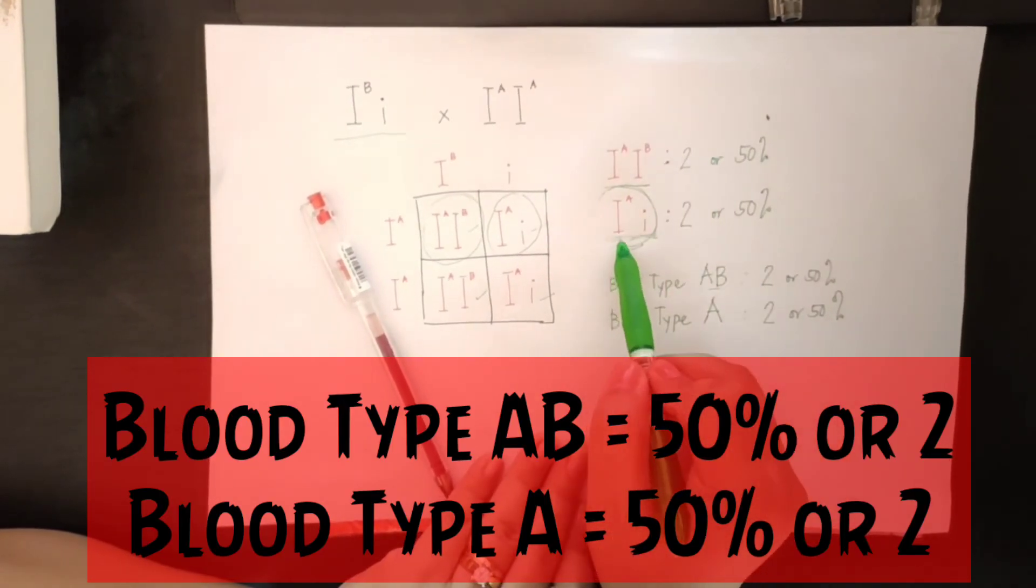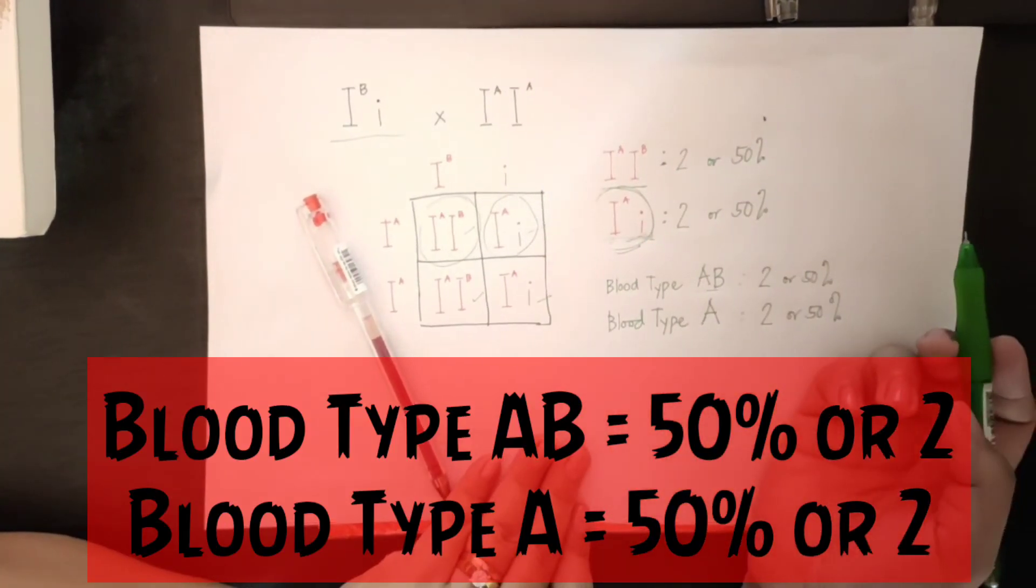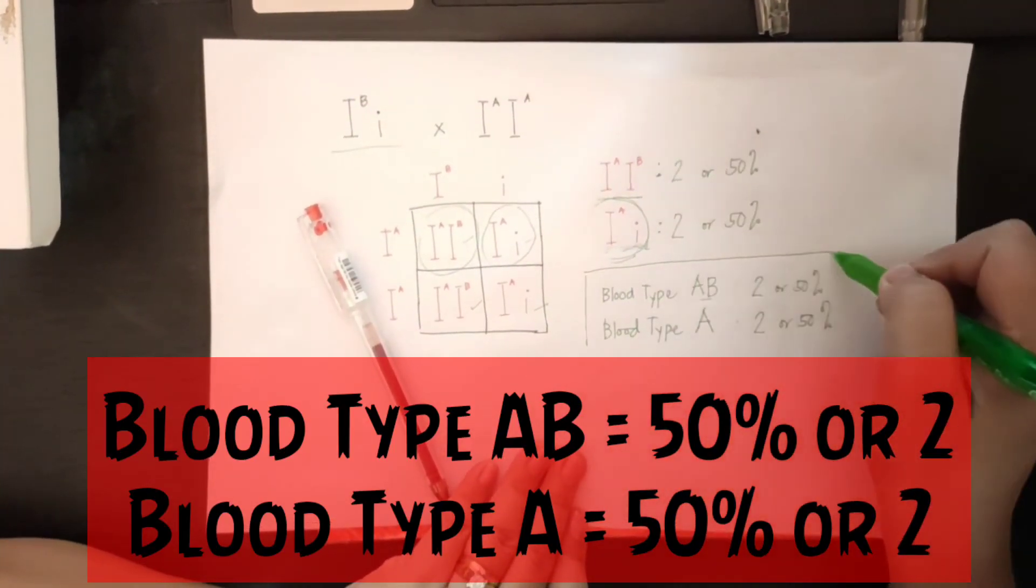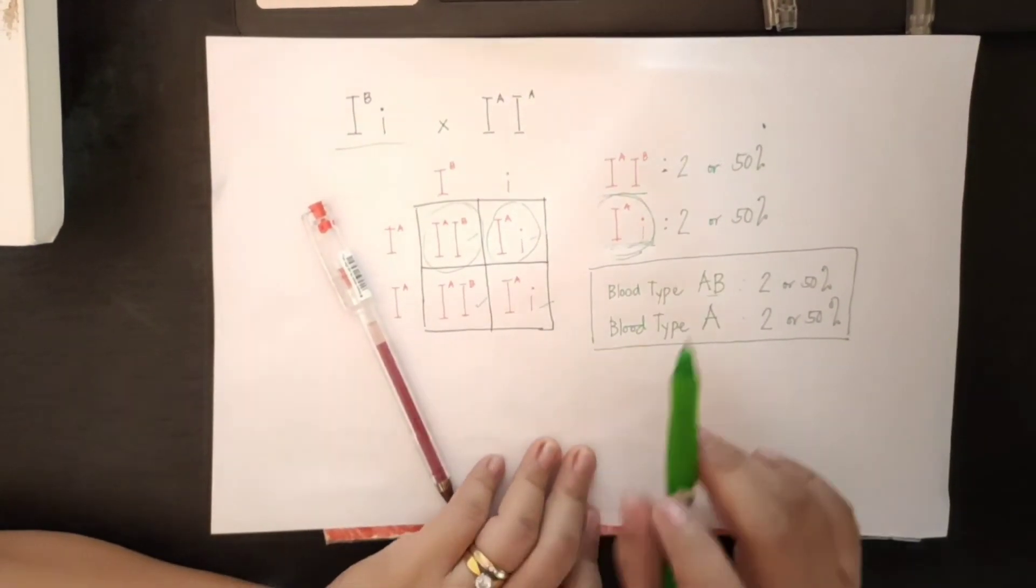and blood type A since it is a heterozygous blood type A. Meaning, 1 allele for dominant A and 1 allele for recessive O. So, this is the final answer. Blood type AB, and blood type A. Okay?